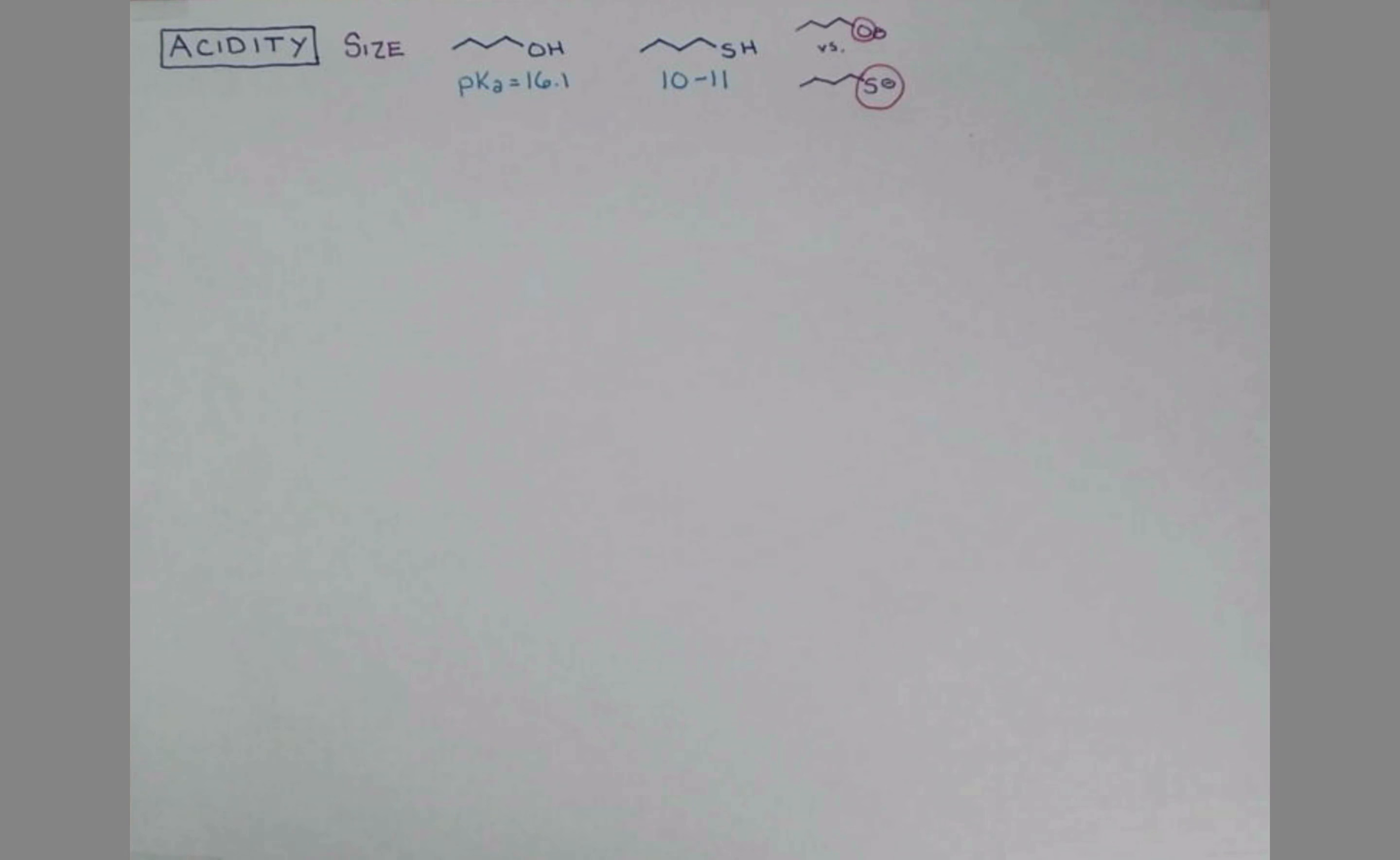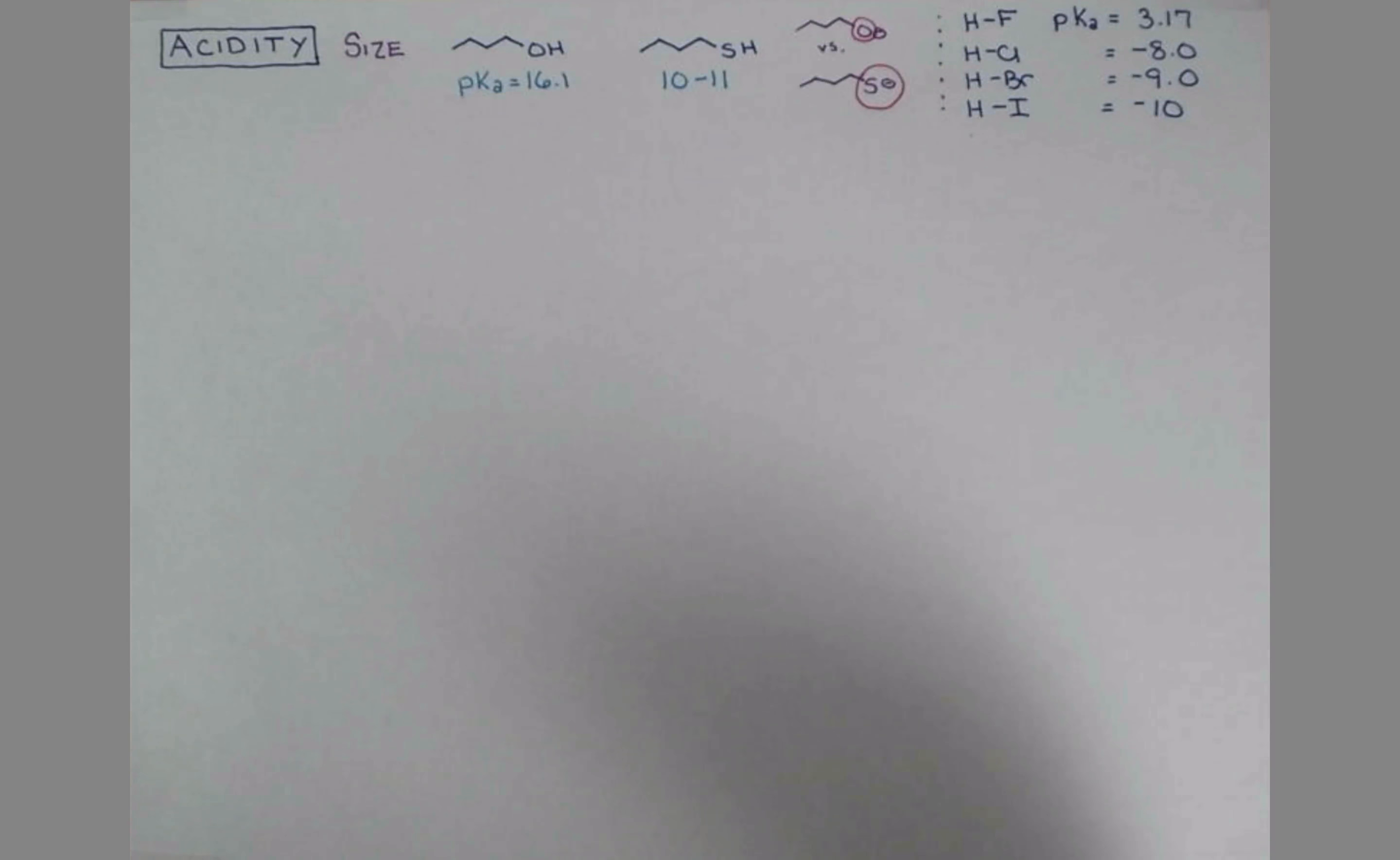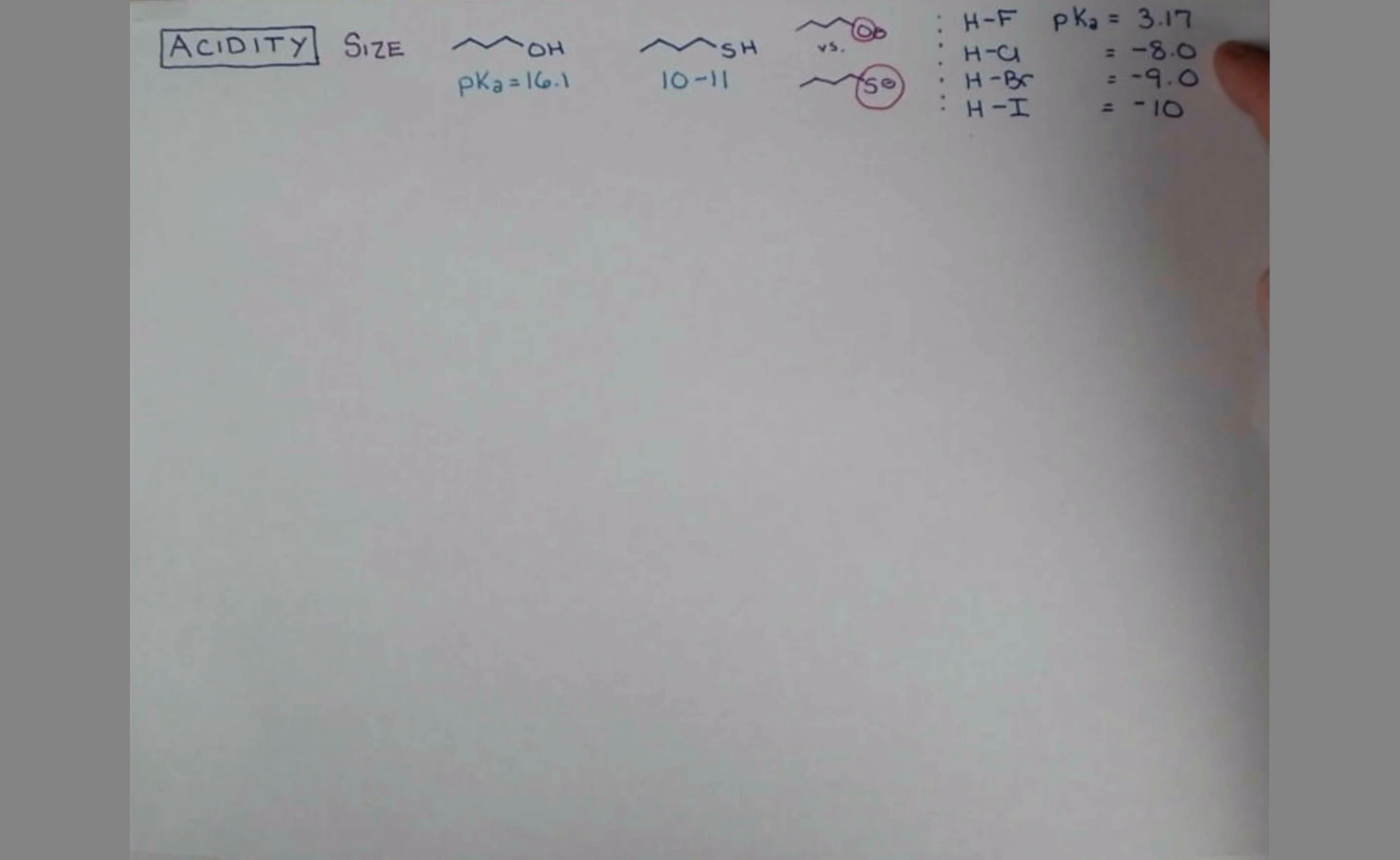This trend is general, and we can look at this again by comparing the acidity of acids derived from the halogens. Now, even though fluorine is the most electronegative element, and you'd think that'd be great for housing a negative charge, and it's not bad. Its pKa is quite low. However, as we increase the atomic size, we can see a dramatic increase in acidity here as well, with HI being the strongest acid derived from the halogens. Iodine is huge, and that negative charge can be spread out over a very large surface.